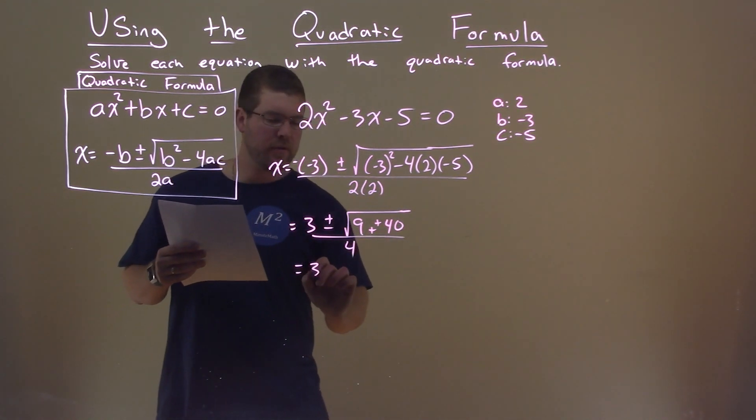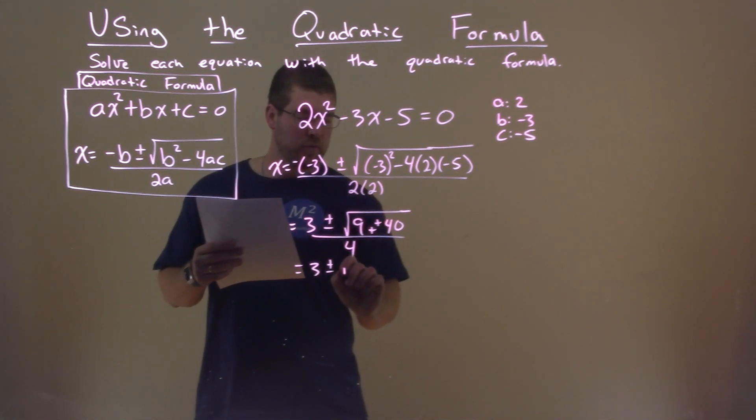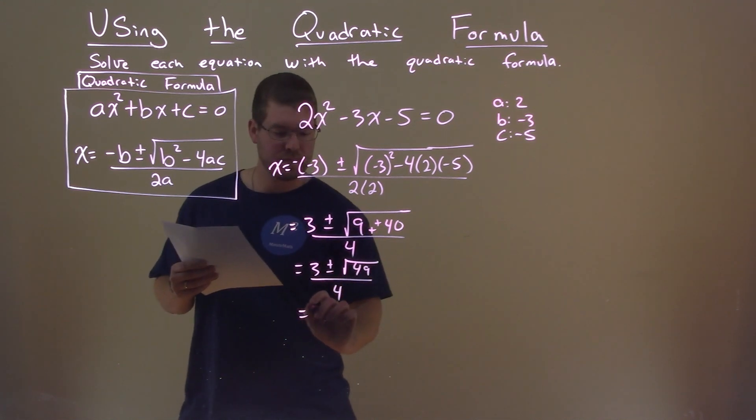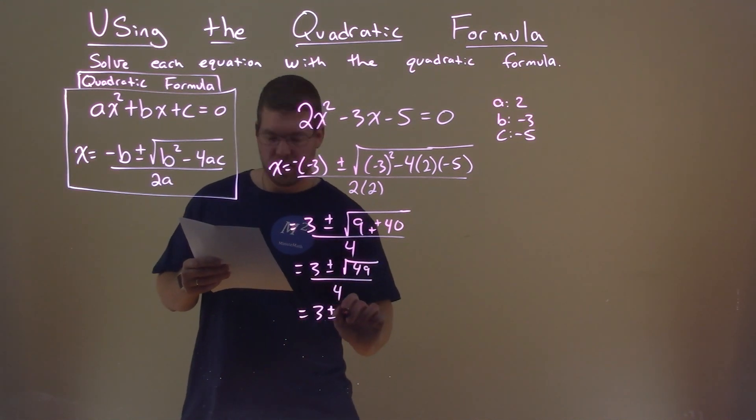Keep going, 3 plus or minus, well, 9 plus 40 is 49, over 4. Keep simplifying, square root of 49 is 7.